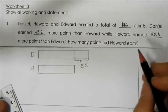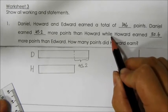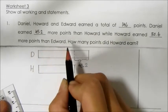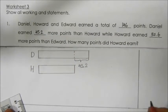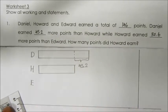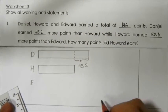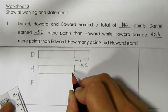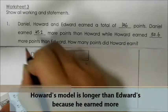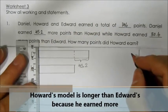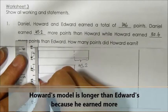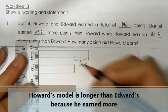The next sentence says Howard earned 30.6 more points than Edward. That means we need to draw a shorter model for Edward as compared to Howard, because Howard earned 30.6 more. As mentioned earlier, the model has to start at the same point.